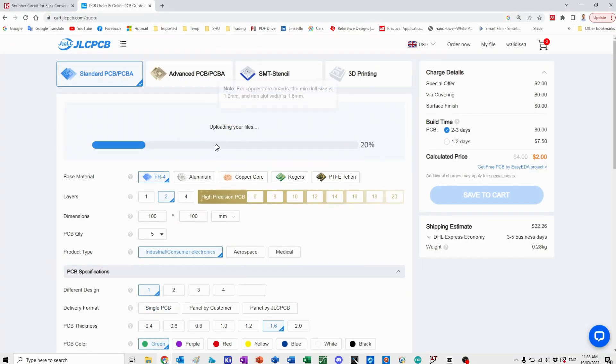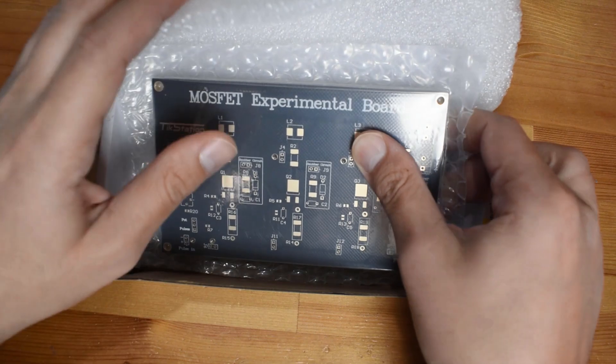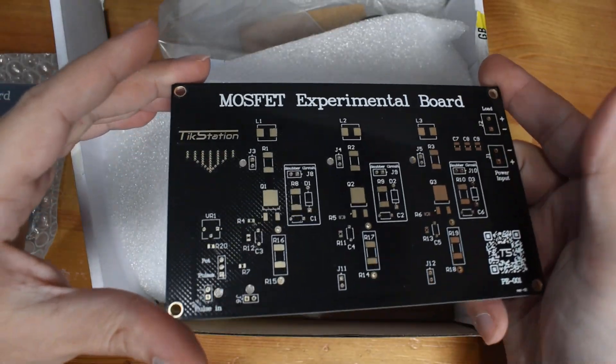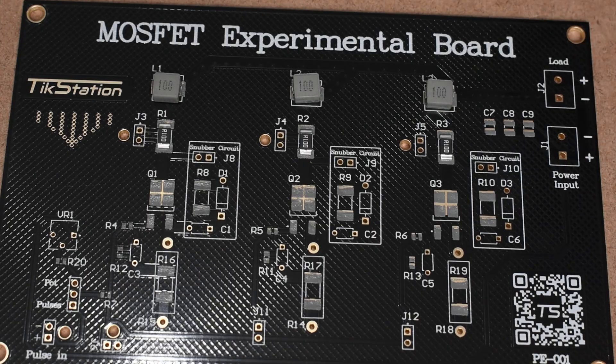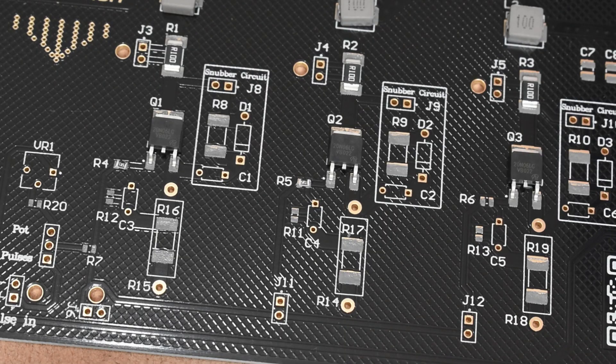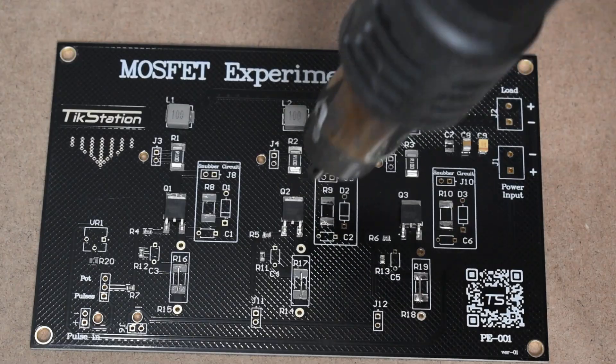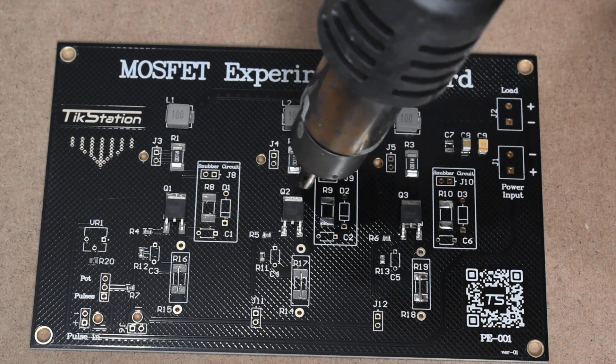I sent this board to PCB manufacturer and received it like this. It is gold plated and with the black color it looks fascinating. I laid off the solder paste. Then I populated the necessary basic components and kept the snubber circuit footprints as free. Then soldered the components using the hot air. And this is how it looks.